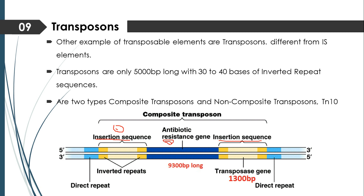Insertion sequences can be 700 to 1500 base pairs long, while the central region of composite transposons is 9300 base pairs long. When the central region is flanked by two copies of the insertion sequences, the composite transposon becomes longer. The insertion sequences flanking the composite transposon are 1300 base pairs long, while the antibiotic resistant gene-containing region is 9300 base pairs long.